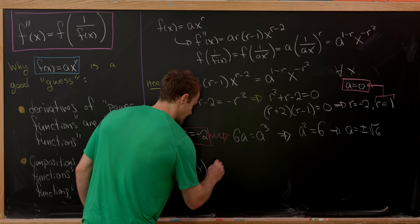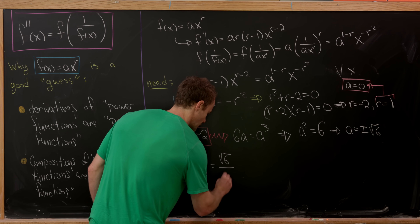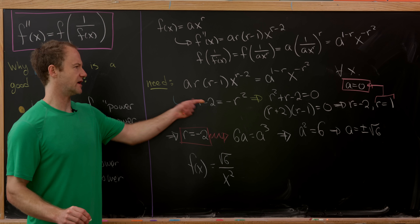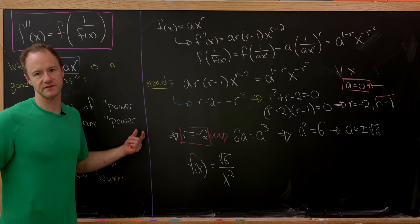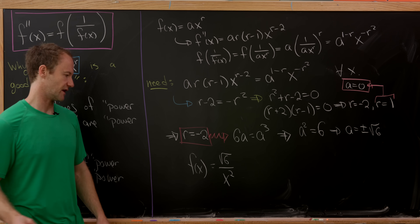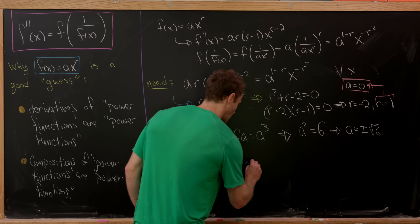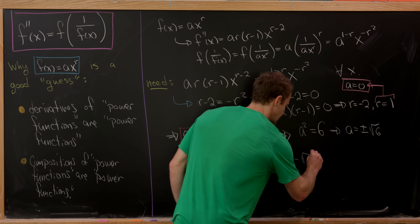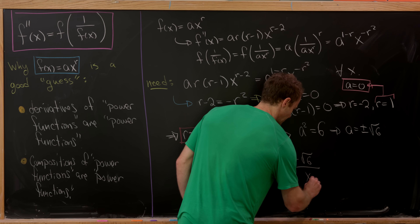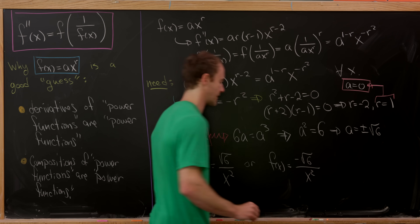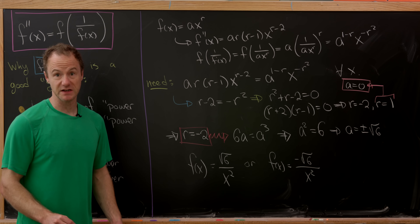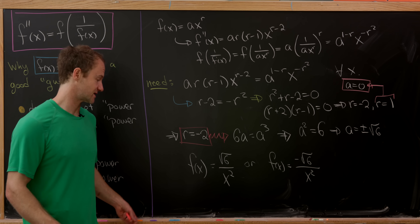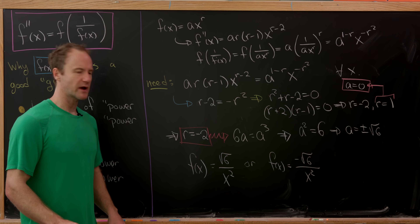That really gives us two nice solutions. We have f(x) equals the square root of 6 over x squared, since the exponent of negative 2 puts x squared in the denominator. Or we have f(x) equals negative the square root of 6 over x squared. So there we've got two solutions, and they're pretty nice.